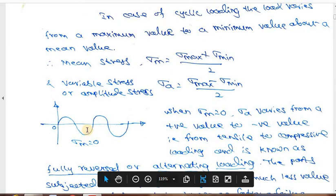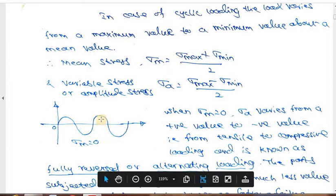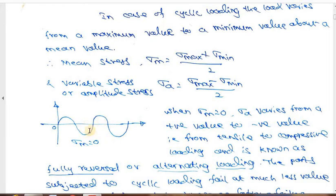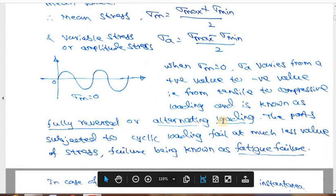In another graph, if the mean stress sigma_m is zero, the sinusoidal curve varies symmetrically about the x-axis, with sigma_a as a positive value and sigma_a as a negative value. This is called the fully reversed case. For example, on an axially loaded member, if we have 100 N tensile force, then immediately after it becomes 100 N compressive — the same magnitude varies between tensile and compressive. This kind of loading is called fully reversal or alternating loading.